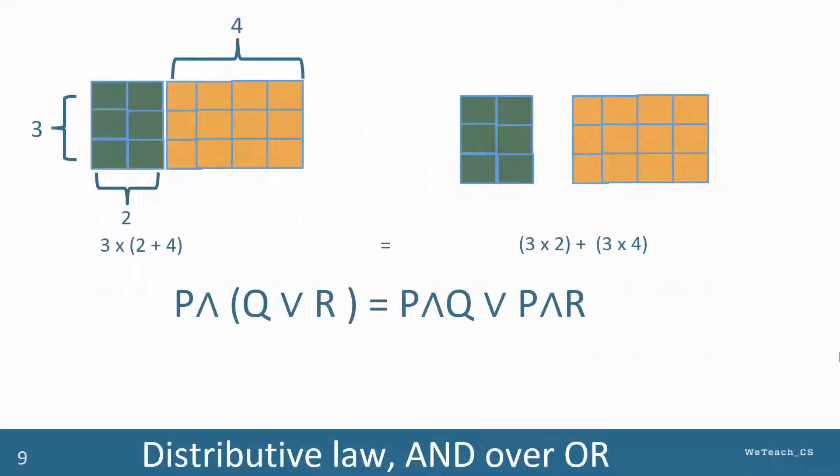One version of the distributive law is also the same as in mathematics, specifically the distributive of AND over OR, working in much the same manner as multiplication over addition, as you can see in this diagram.